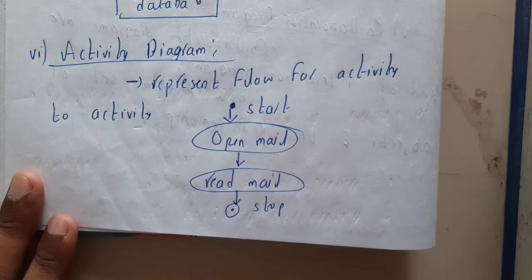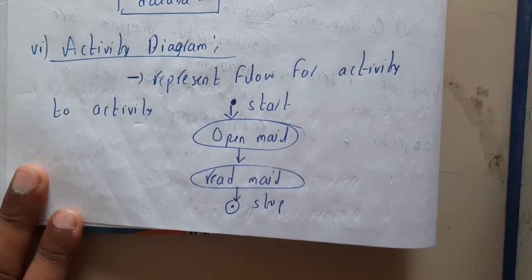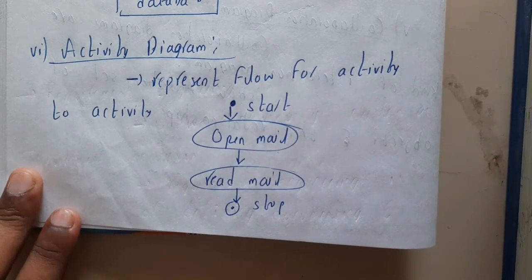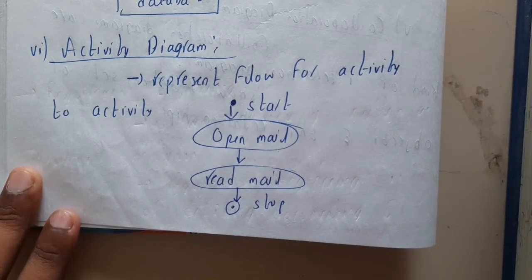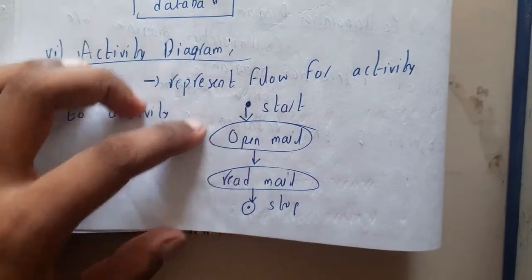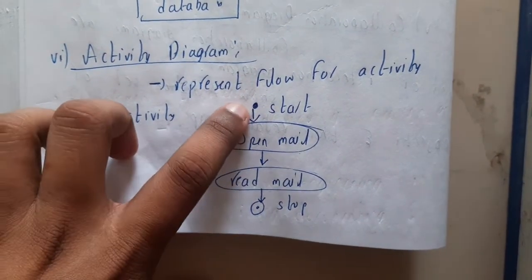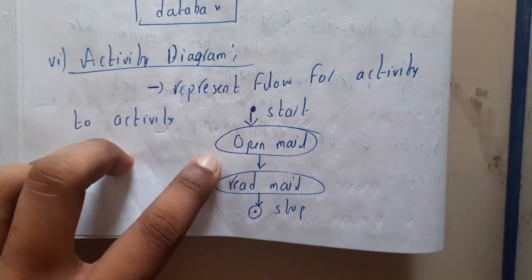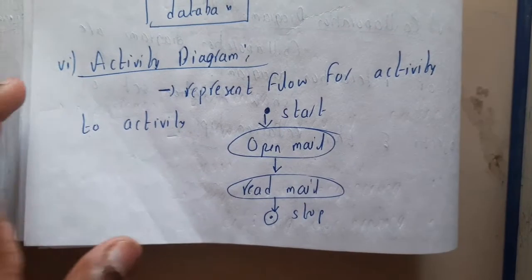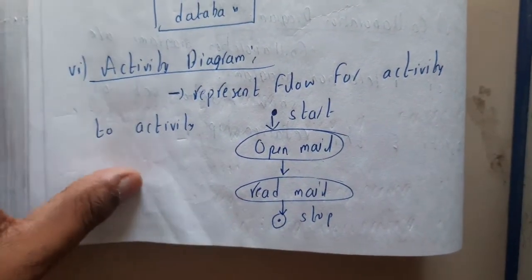The activity diagram is simply like a flowchart — it explains the flow of the code. For example, if you want to send or read a mail: you start by opening your mail, read the mail, then close it. I'm just giving an introduction here since we'll discuss these in detail in later lectures.